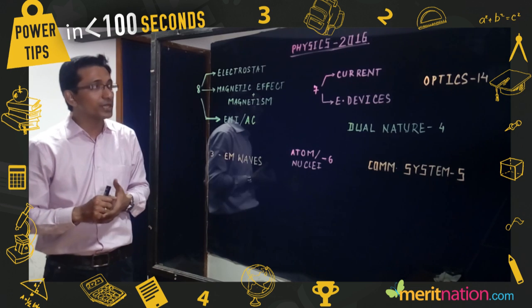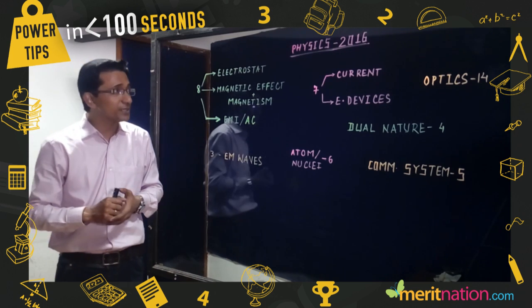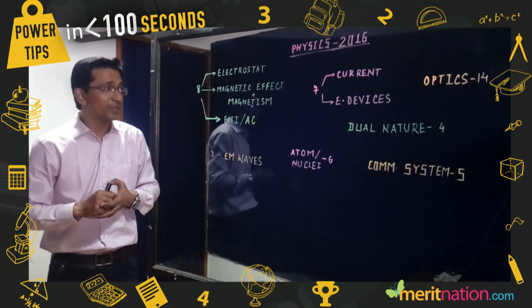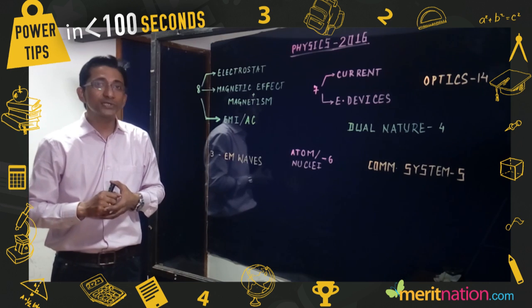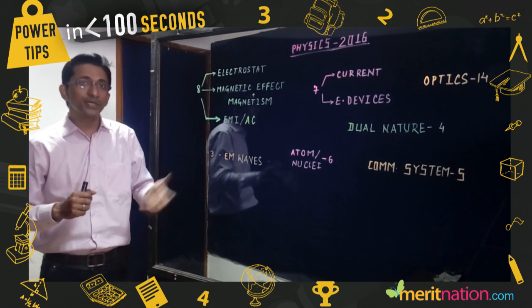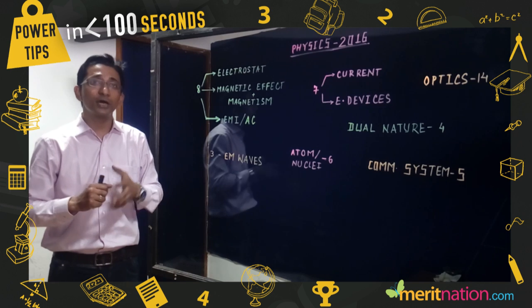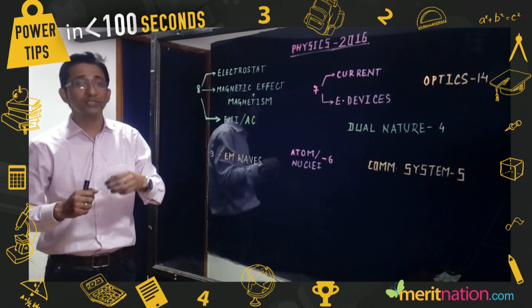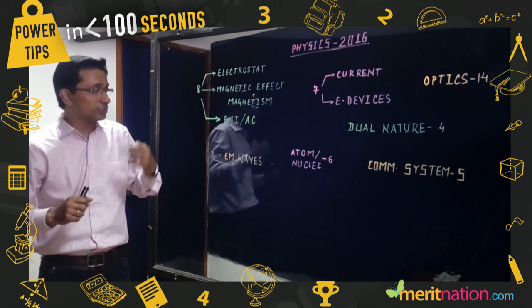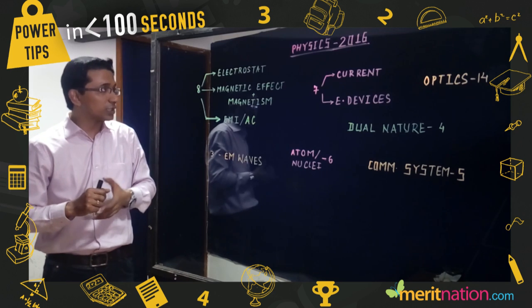For dual nature, you have to be clear about Davisson and Germer experiment and matter waves. Communication systems cover GSM, internet, and satellite communication. For atoms and nuclei, you need to understand fission and fusion, which are my personal favorites, and also be clear about different models.